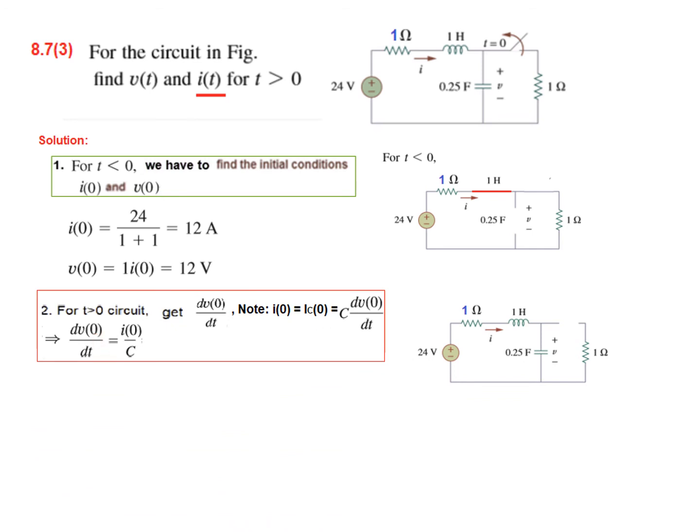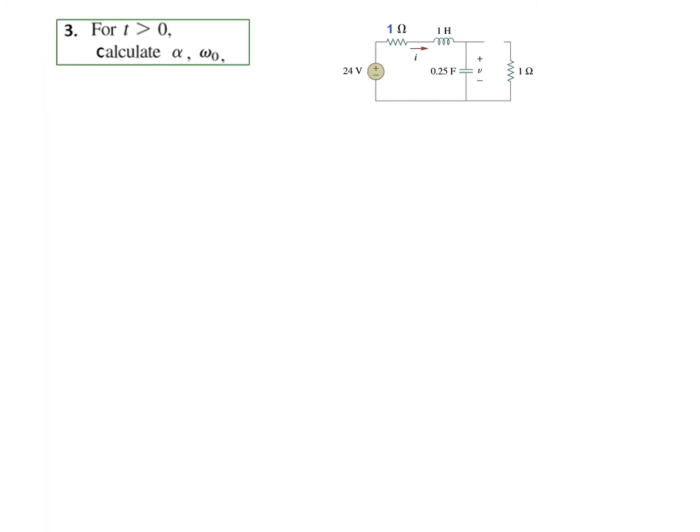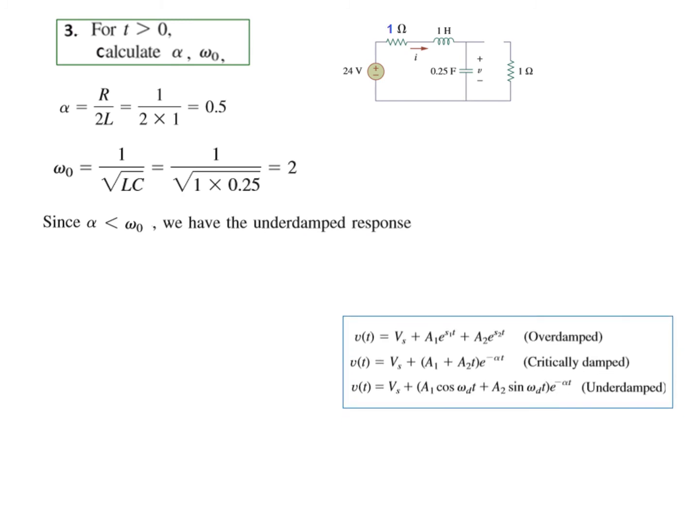dV0/dt is I0 over C. I0 is 12. We know the value of C, 0.25. So dV0/dt is 48. Second step done. Third step: alpha and omega. This is the circuit. The switch is open. So this resistance is out. 1 ohm resistance in the circuit. So R is 1, 2L. So alpha is 0.5. Omega is 2. And now alpha is less than omega. Therefore we have an under damped case. So from the 3 equations we will put this one which is for the under damped.